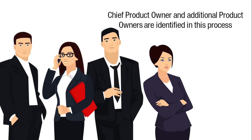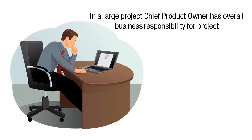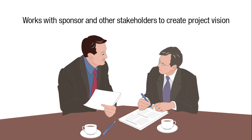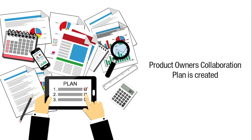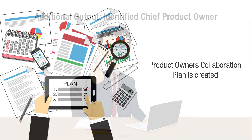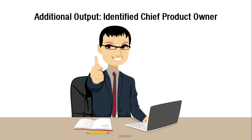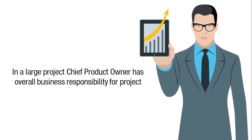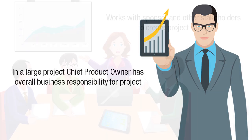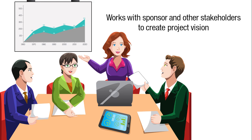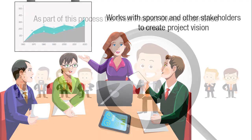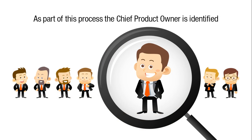A chief product owner and additional product owners are identified in the Create Project Vision process. In a large project, the chief product owner has the overall business responsibility for the project and works with the sponsor and other business stakeholders to create the project vision. Additionally, the product owner's collaboration plan is created. The chief product owner is identified as an additional output, and the identified product owner is an updated output, since in a large project there are multiple product owners who also need to be identified in this process.